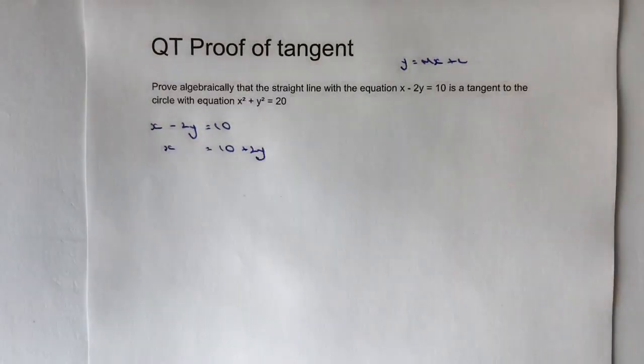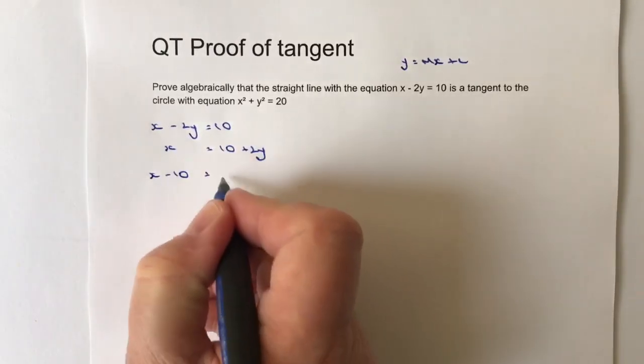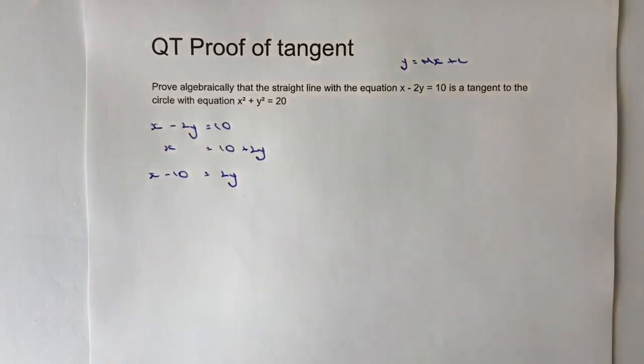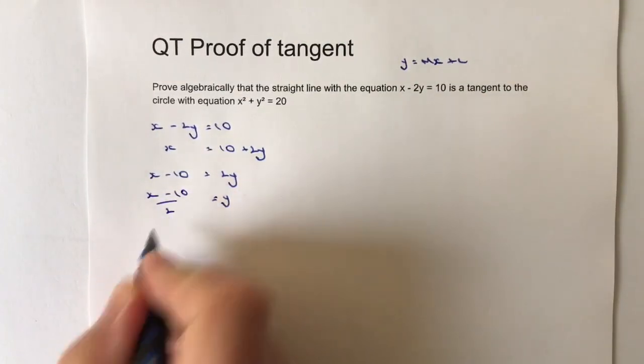Then I'm going to divide through by 2, so I'm going to get y equals x minus 10 over 2.